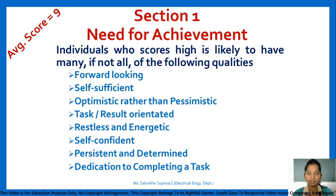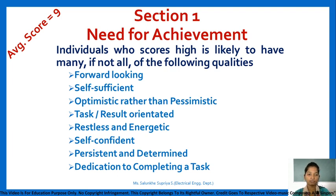Section 1 is related to need for achievement. An individual who scores high in this section is likely to be forward-looking, self-sufficient, optimistic rather than pessimistic, task or result-oriented, restless and energetic, self-confident, persistent and determined, and dedicated to completing their own work.